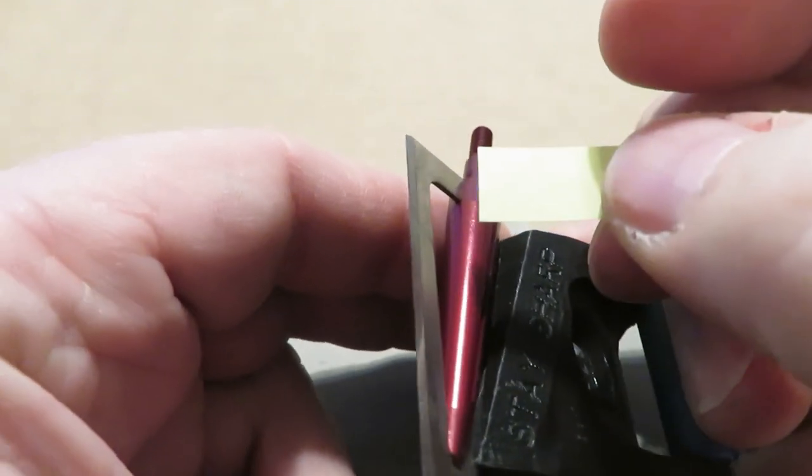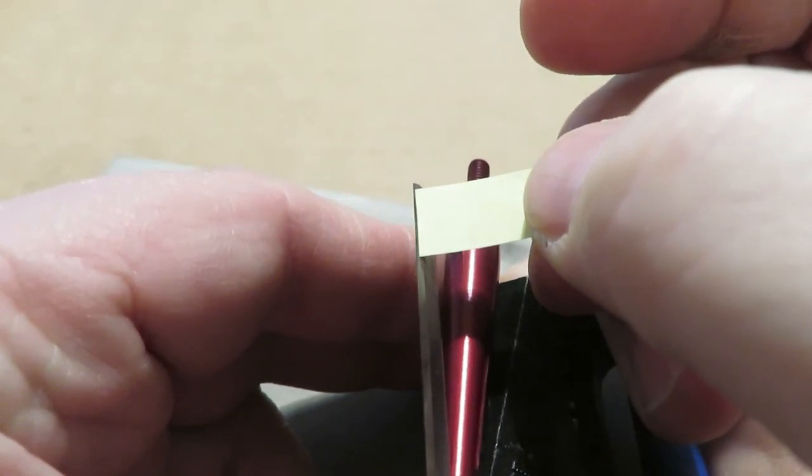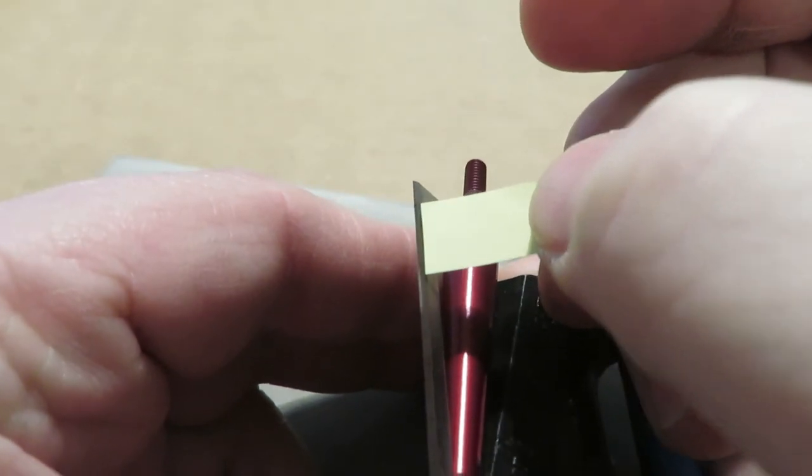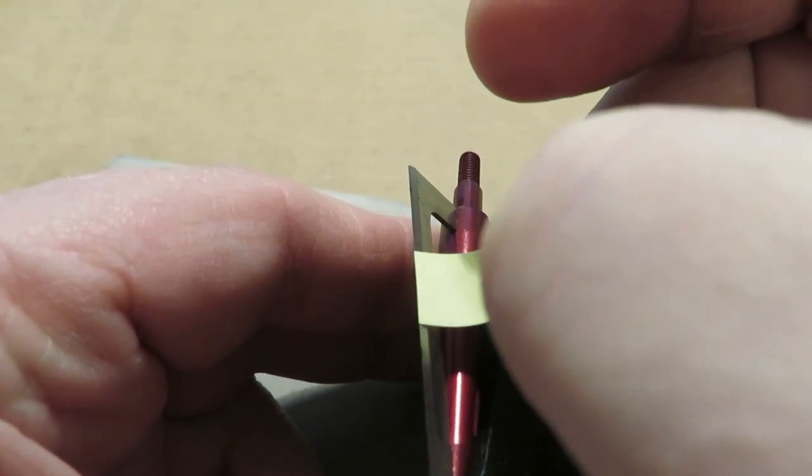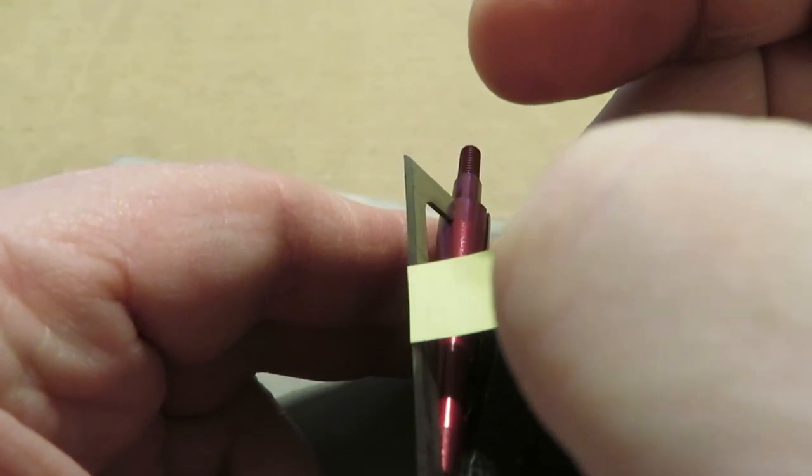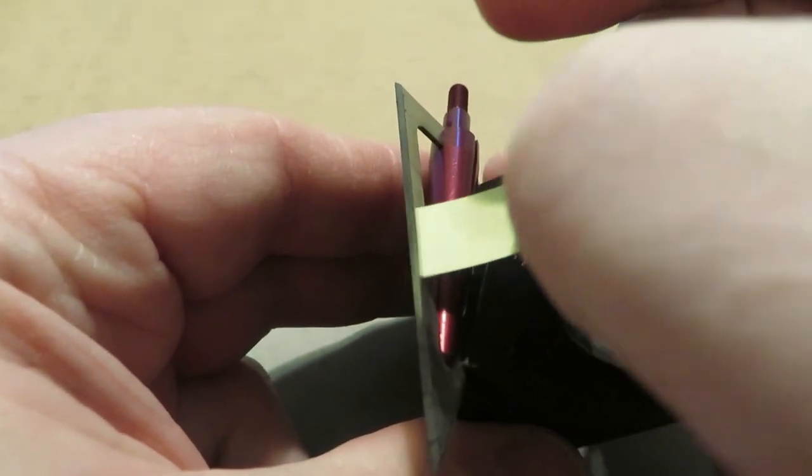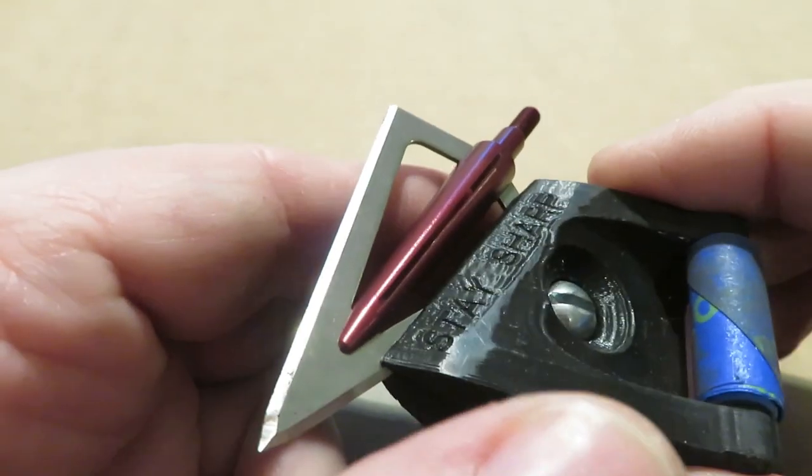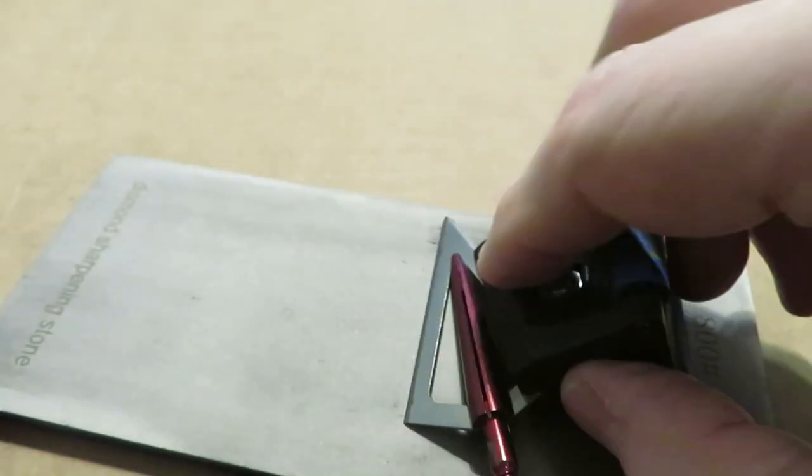All righty, time to check for the second burr at 800 grit. That paper flexing and hanging up on the burr says that we have achieved it. Now we know we have had a burr on both sides. Let's go break this new burr off, break it off again and again.